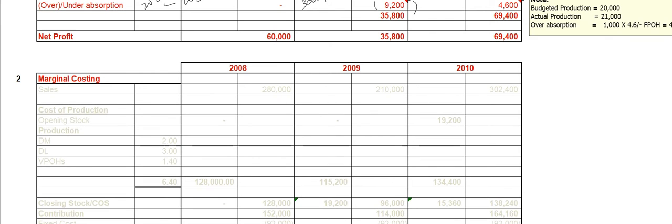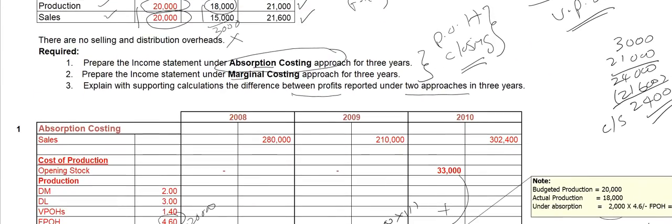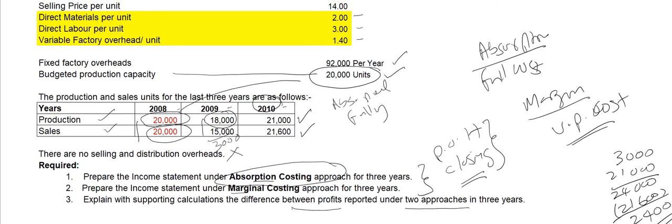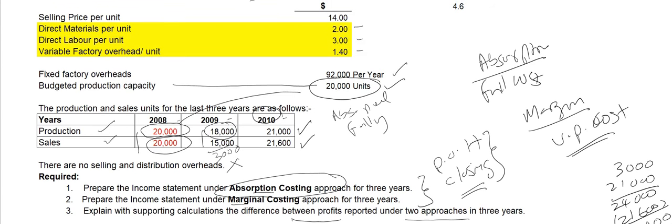Welcome back. Now let's move on to the marginal costing approach and see how to calculate the net profit under marginal costing. As I explained in my previous video, under the marginal costing approach, your production cost will be valued at variable production cost only — we don't consider the fixed overhead cost here. That will be treated as a period cost in the income statement.